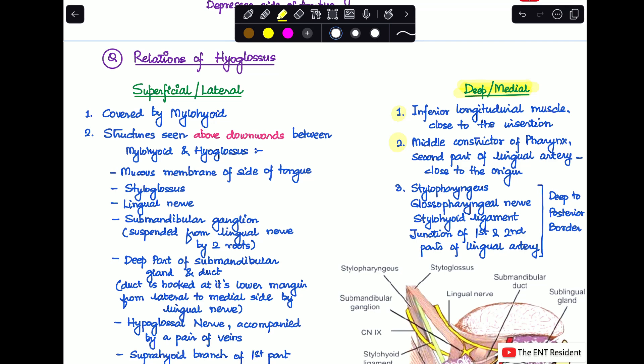And the stylopharyngeus muscle, glossopharyngeal nerve, stylohyoid ligament, and the junction of first and second parts of lingual artery deep to the posterior border of the muscle. So these are the deep or medial relations.